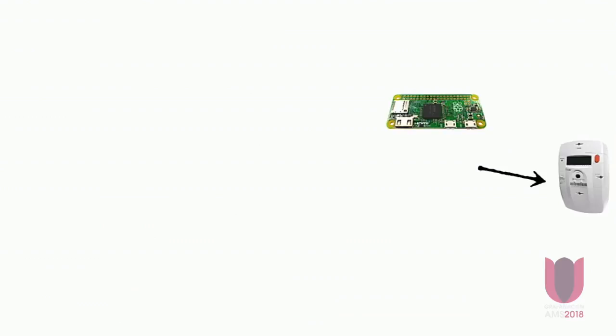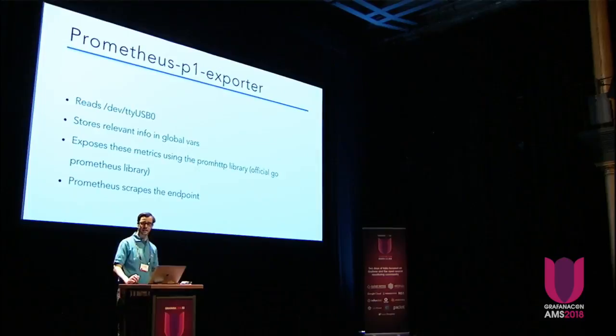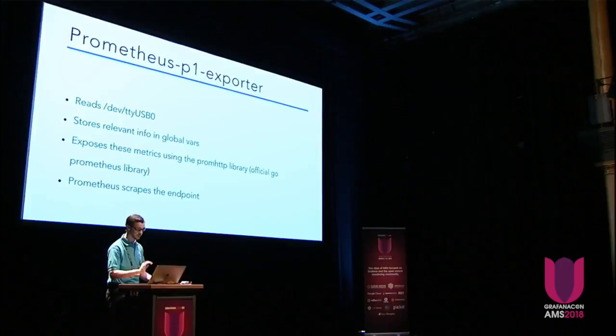So this is what we have so far. I wrote an exporter in Go using the Prom HTTP library that gets the data from the P1 port, stores it in global variables, and then exposes those metrics to be scraped by Prometheus. I know it's global variables, but it's my pet project, so I feel like I can do whatever I want. This is open source — the links are at the end.